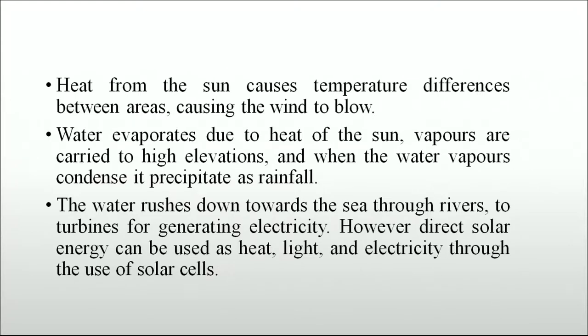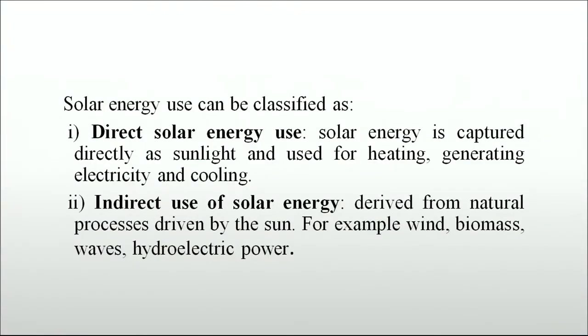Direct solar energy can be used as heat, light and electricity through the use of solar cells. Solar energy can be classified as direct solar energy — captured directly as sunlight for heating, generating electricity and cooling — or indirect solar energy, which is derived from natural processes driven by the sun, such as wind, biomass, waves and hydroelectric power.